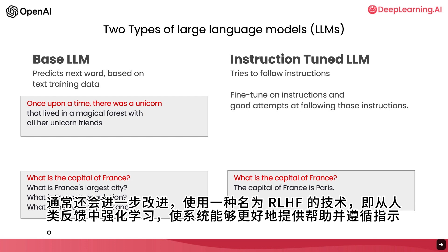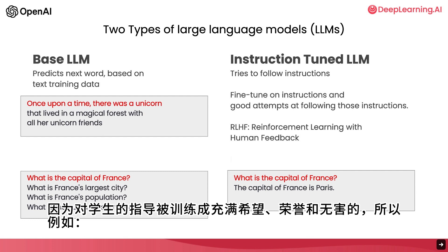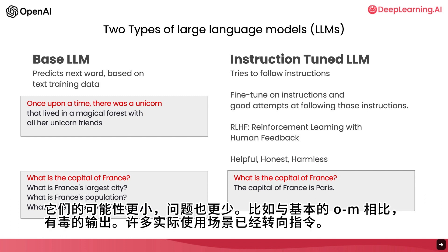And then often further refined using a technique called RLHF — reinforcement learning from human feedback — to make the system better able to be helpful and follow instructions. Because instruction-tuned LLMs have been trained to be helpful, honest, and harmless, they're less likely to output problematic text, such as toxic outputs, compared to a base LLM.